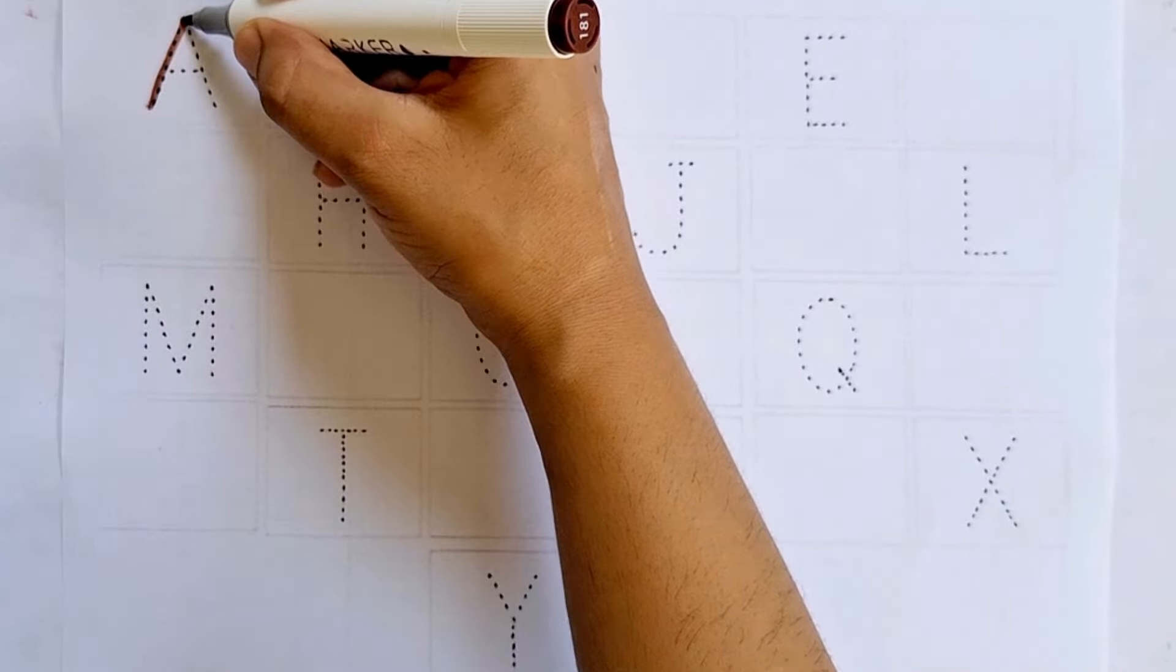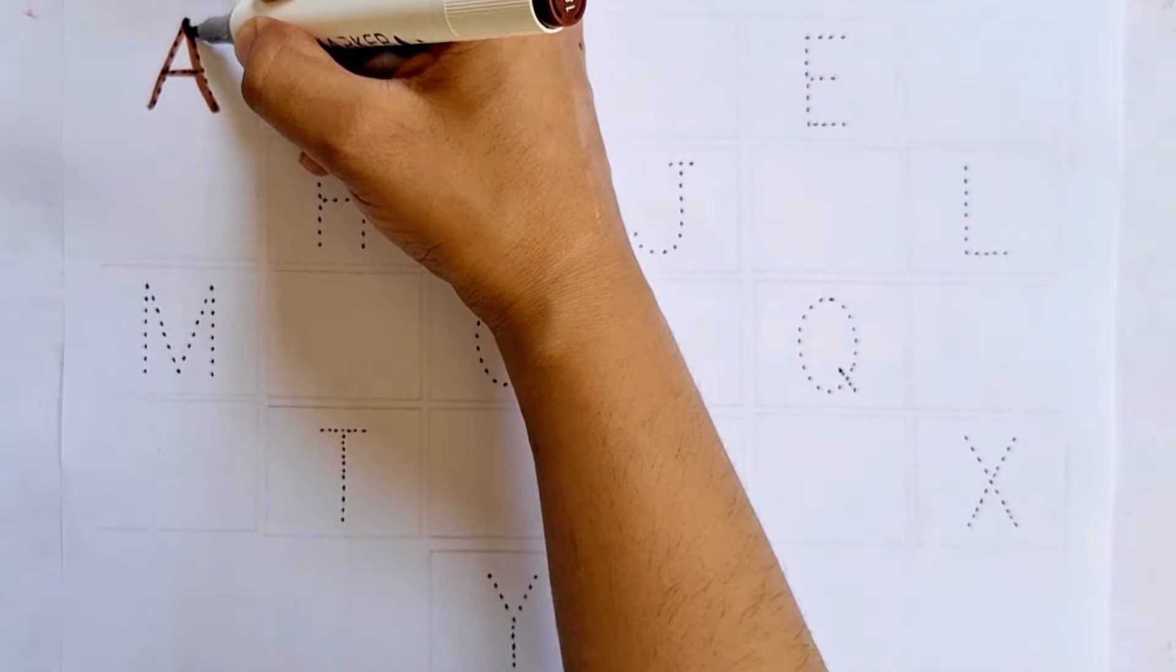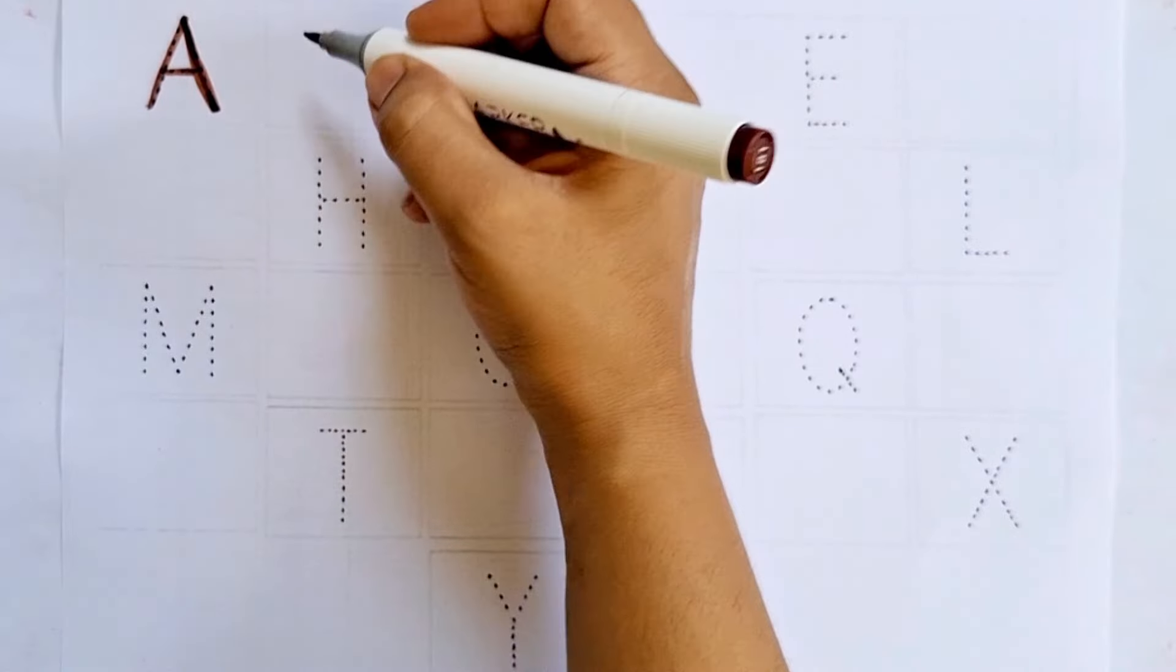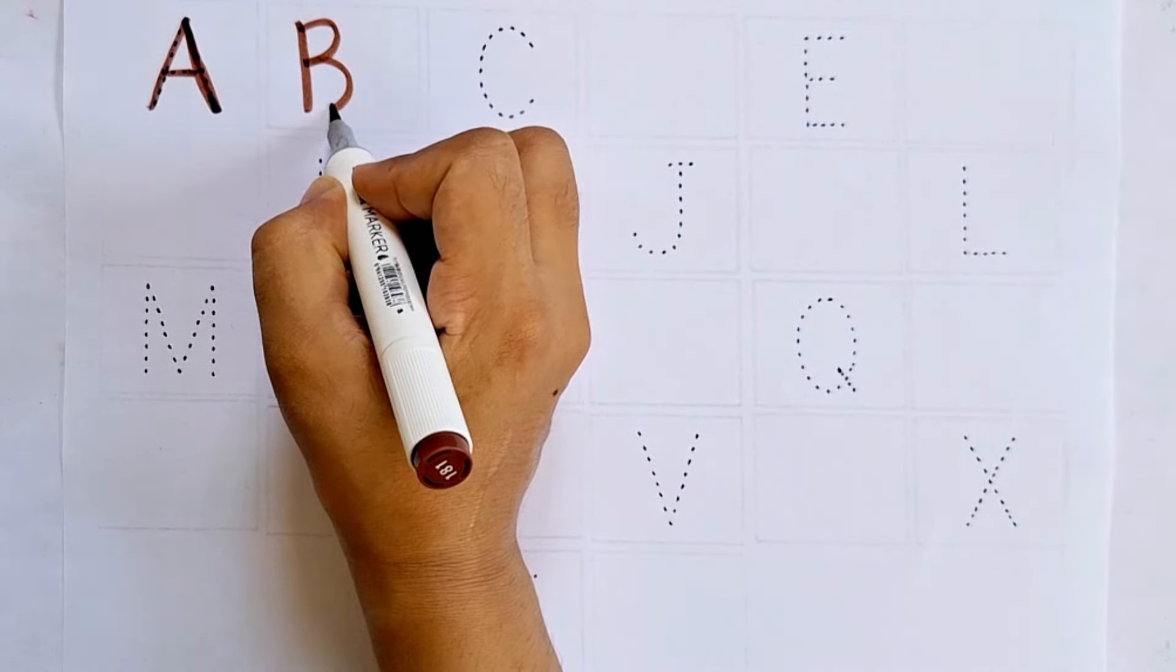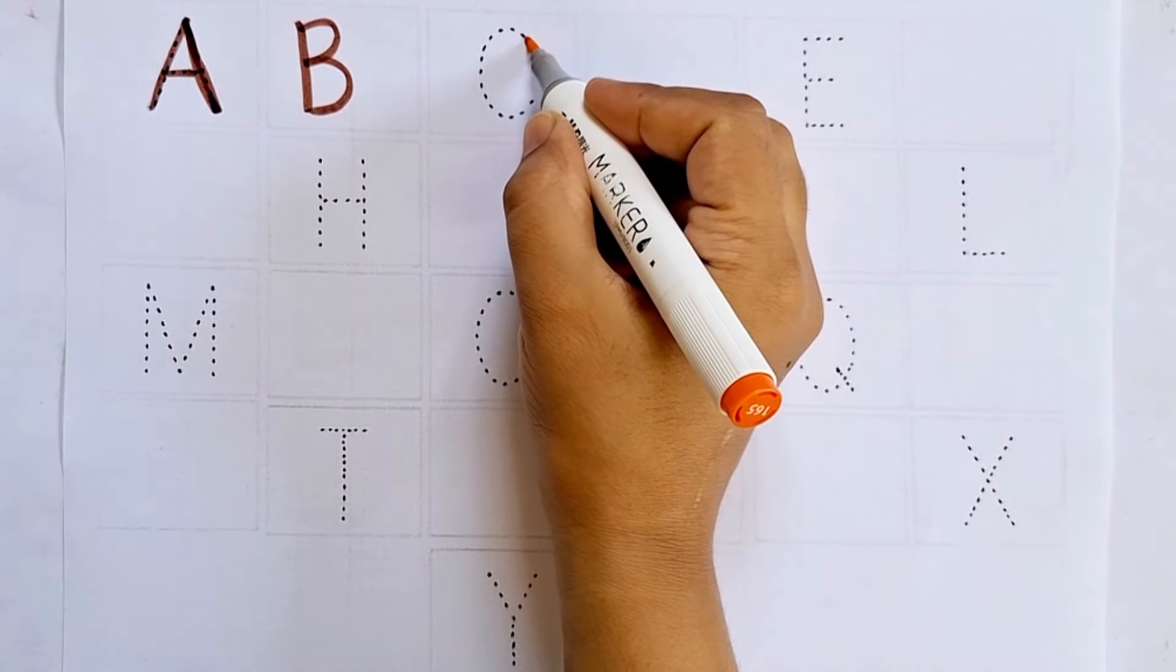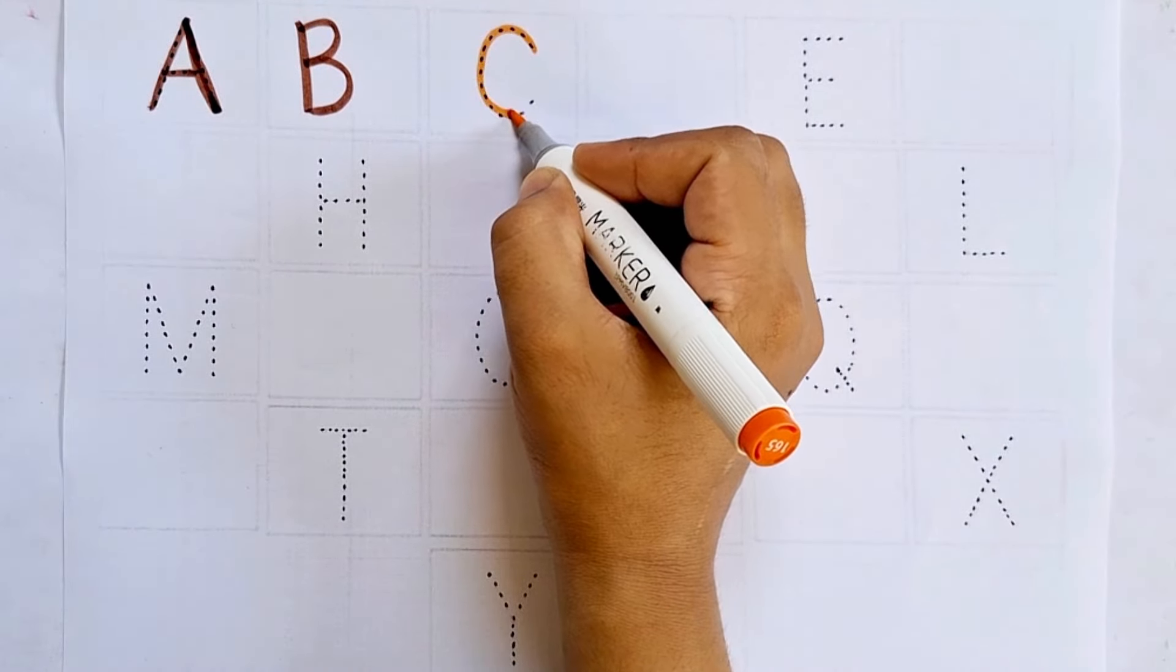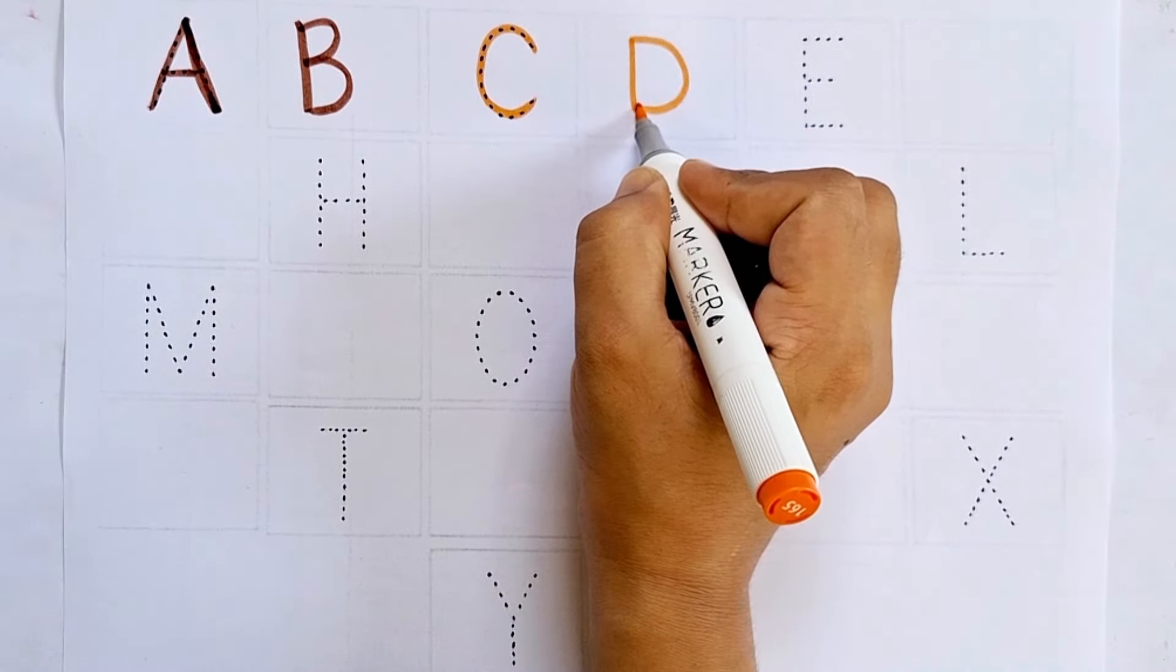A, A for apple. B, B for ball. C, C for cat. D, D for dog.